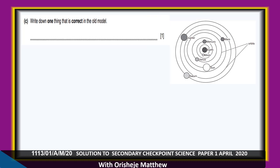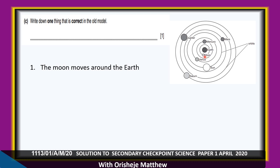Write down one thing that is correct in this old model compared to the current model. The moon moves around the Earth — you have the Earth and the moon revolving around it, which is correct. Also, planets move in orbits, and in the old model the planets are shown moving in orbits.